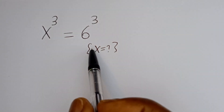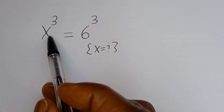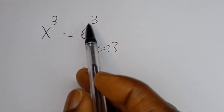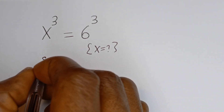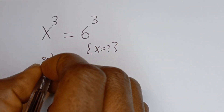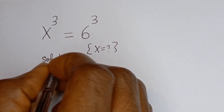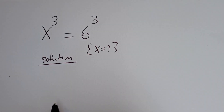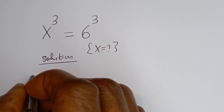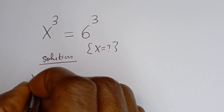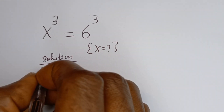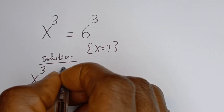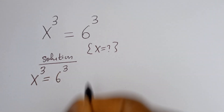Hello. How to solve for x in this equation: x to the power of 3 is equal to 6 to the power of 3.